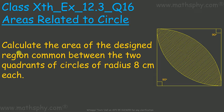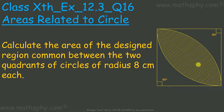This question says: calculate the area of the design region common between the two quadrants of circle of radius 8 cm each. We have one quadrant here with radius 8, and another quadrant here with radius 8. Both these quadrants give this common area. We have to find out what is the area of this region.